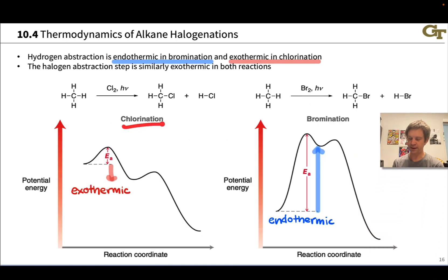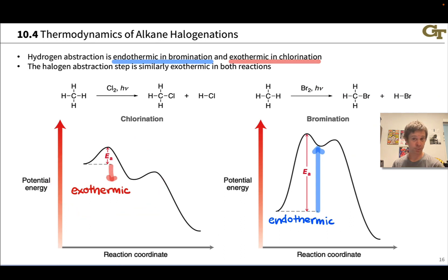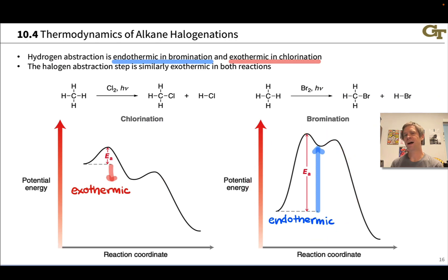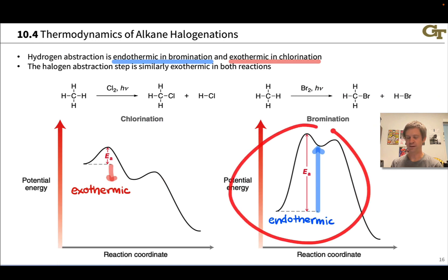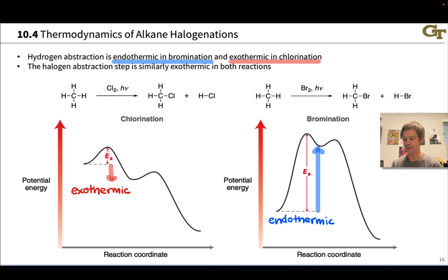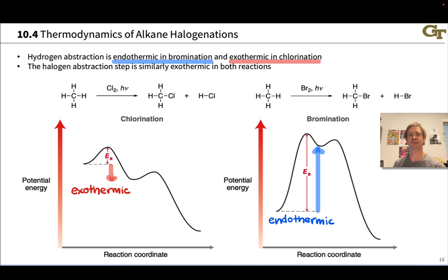These reaction coordinate diagrams underscore the point that in chlorination, the first hydrogen abstraction step by the halogen atom is exothermic, while in bromination this step is endothermic. The origin of the higher selectivity of bromination has to do with this endothermic first step. The transition state energy is closer in energy to the product — a product-like transition state — and the key product driving the energy is the carbon radical. So the transition state is radical-like, and effects on the stability of the radical are going to be felt in the transition state.